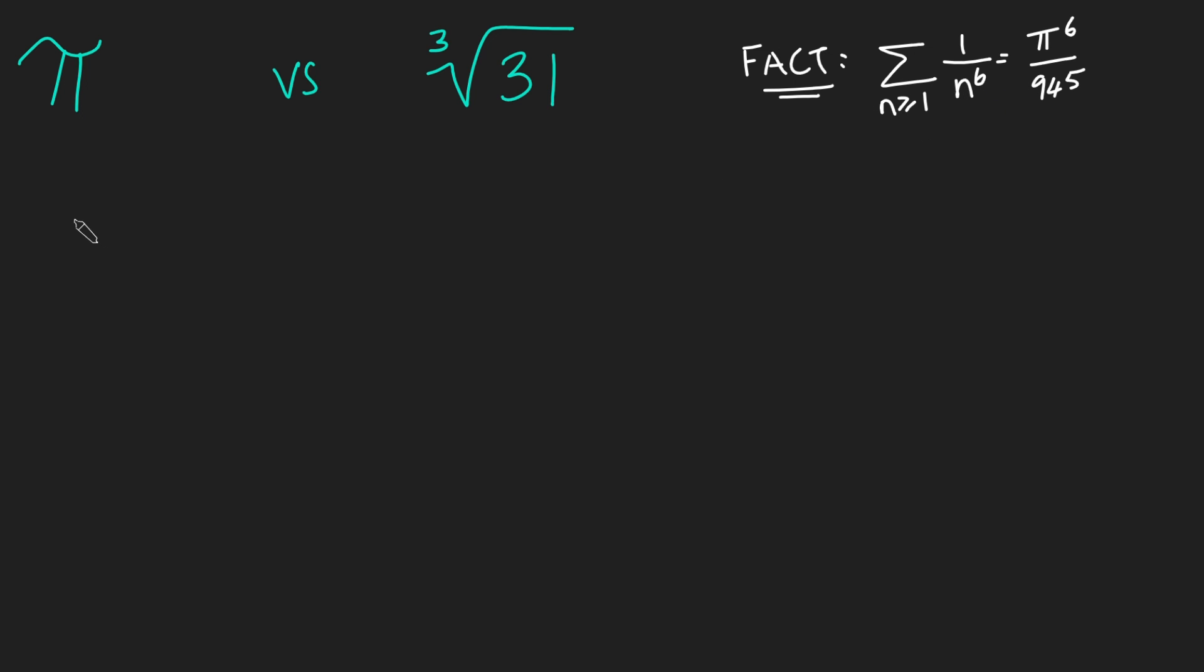So let's start from the left-hand side, that the sum from n is 1 to infinity of 1 over n to the 6 is pi to the 6 over 945. But I'm going to split this into the sum from n is at least 1 of 1 over n to the 6, but where n is odd, and add on the case where n is even, of 1 over n to the 6, like so.